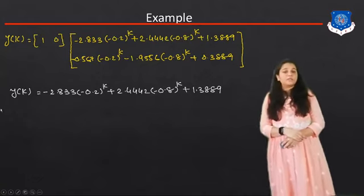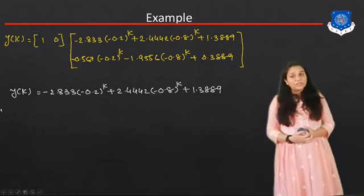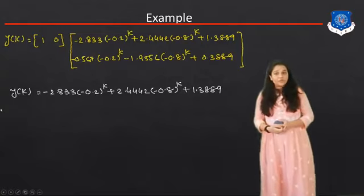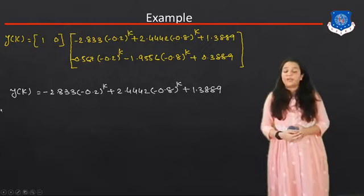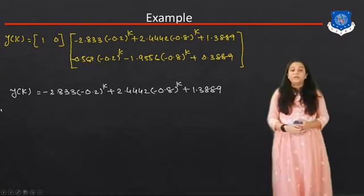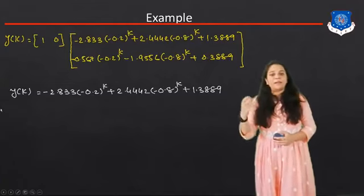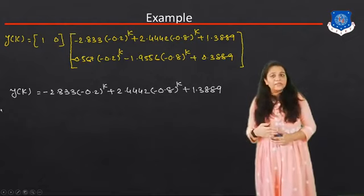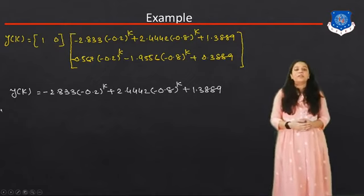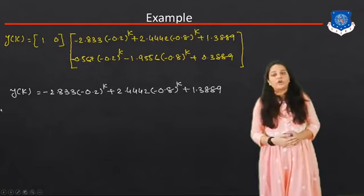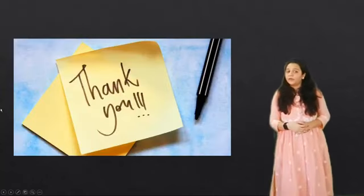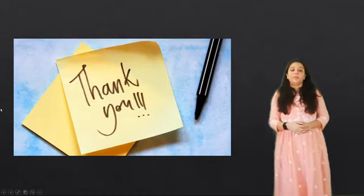In summary, using the Z-transformation method we can find the State Transition Matrix as well as X1(K) and X2(K). The steps are: first find (ZI - G)⁻¹ = adjoint / determinant; then find X(Z) using the initial condition and input; take the inverse Z-transform to get X(K); and finally compute Y(K) = C·X(K). Thank you everyone. If anyone has doubts, please contact me via email.